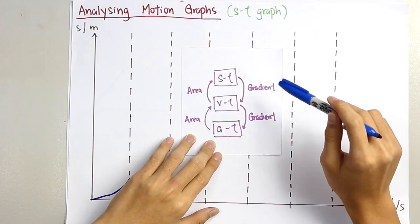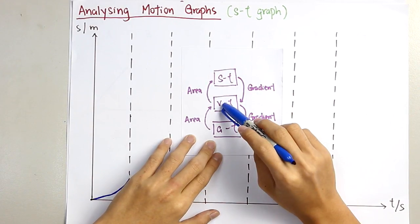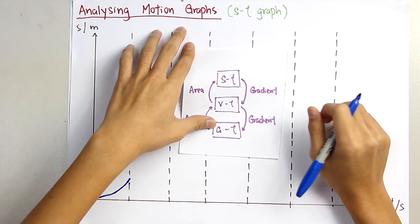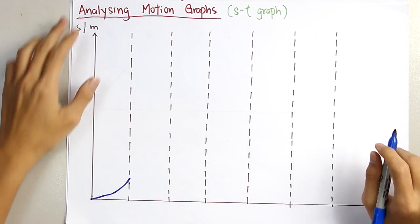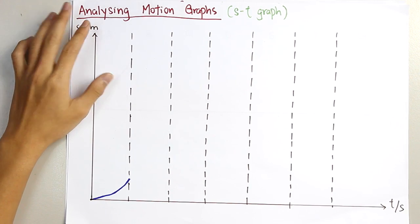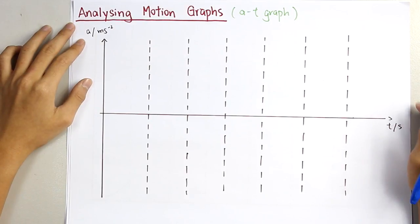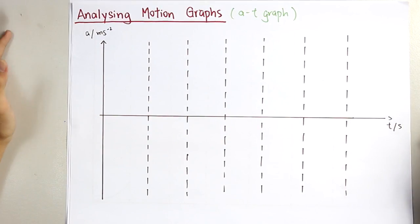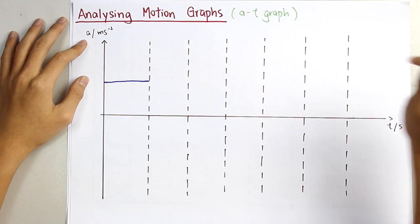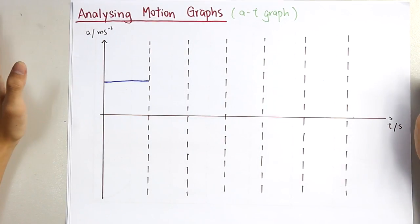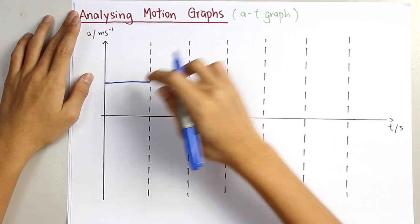As you can see, the gradient for the ST graph represents the velocity. So when the velocity is increasing, the gradient is increasing. For the AT graph, when there is an increasing velocity, it shows that you have constant acceleration, as the gradient of the velocity against time graph is constant. So constant acceleration.